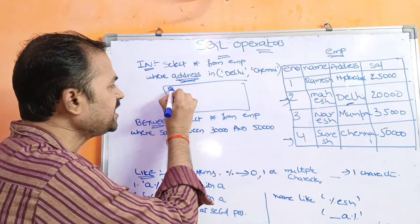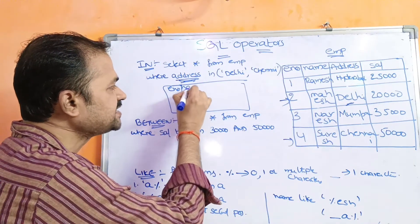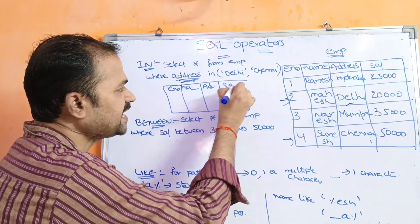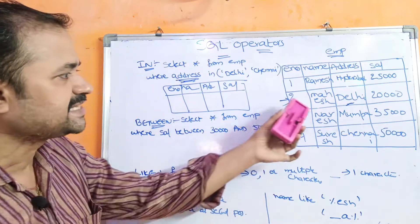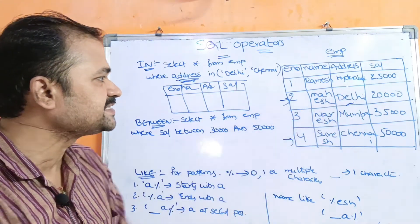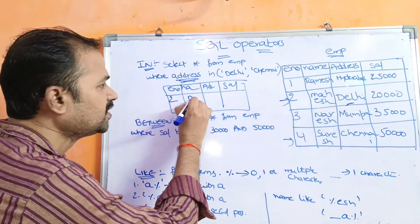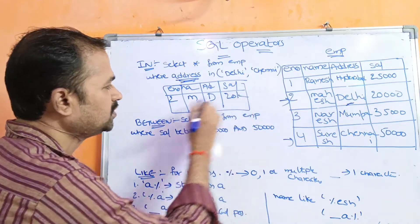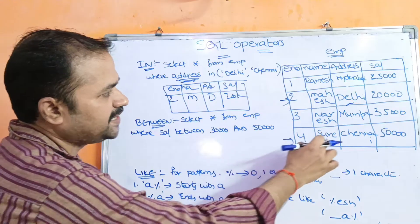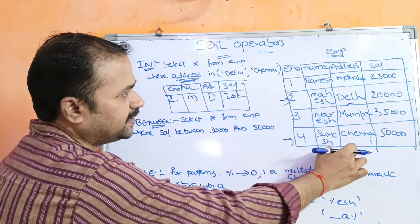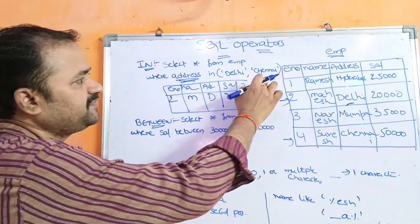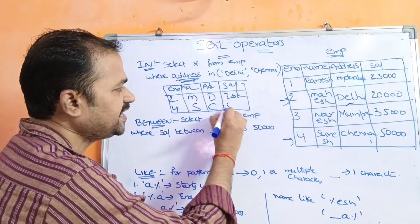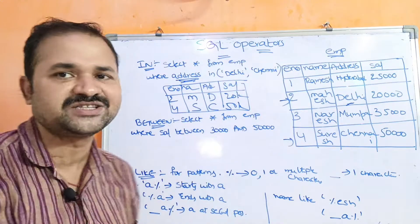The output has four columns: employee number, name, address, and salary. First it displays the second record — because the address is Delhi — showing 2, Mahesh, Delhi, $20,000. Next, the fourth record has address Chennai, so it will also be displayed: 4, Suresh, Chennai, $50,000. So this is the output.